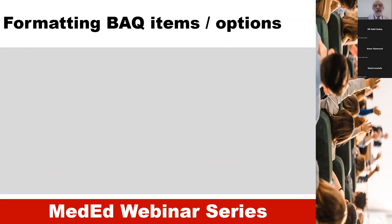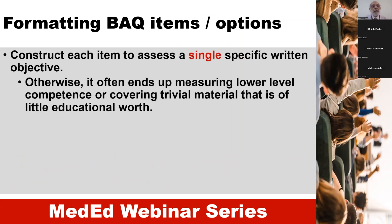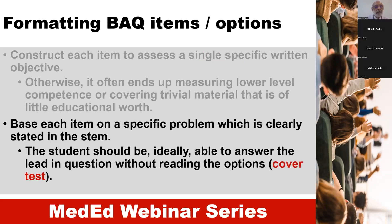Next, formatting of these items or options. Construct each item to assess a single specific written objective — make sure that one option does not assess more than one objective, as doing so would end up measuring a lower level of competence or covering trivial matter of little educational worth. Base each item on a specific problem clearly stated in the stem, and students should ideally be able to answer the lead-in question without reading the options — that is the cover test — which is one way of assessing the quality of a single best answer question.